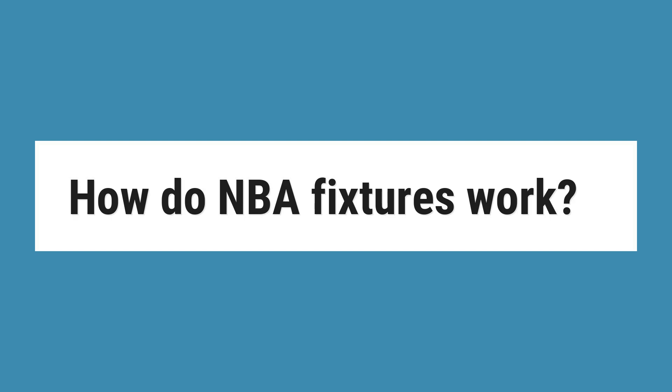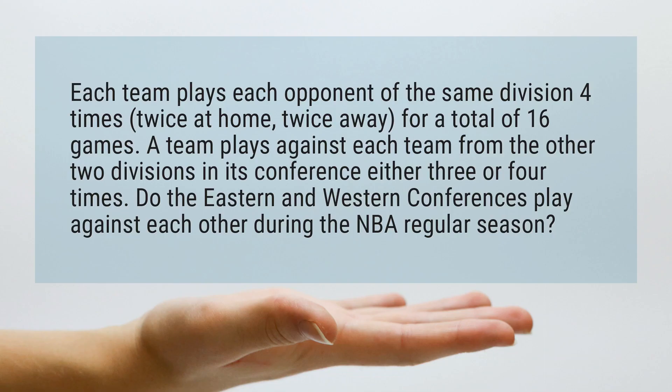How do NBA fixtures work? Each team plays each opponent of the same division four times — twice at home, twice away — for a total of 16 games.